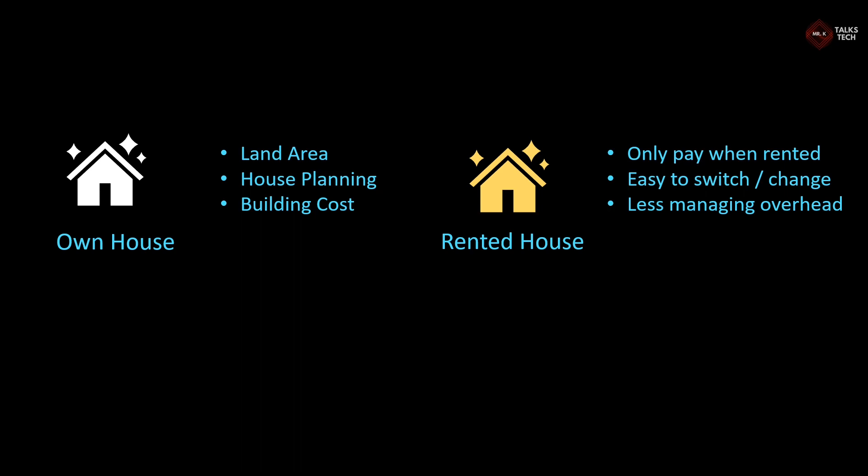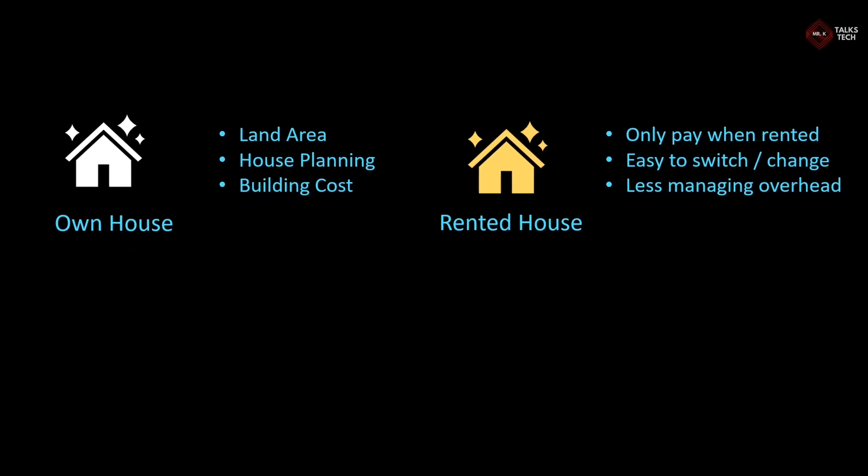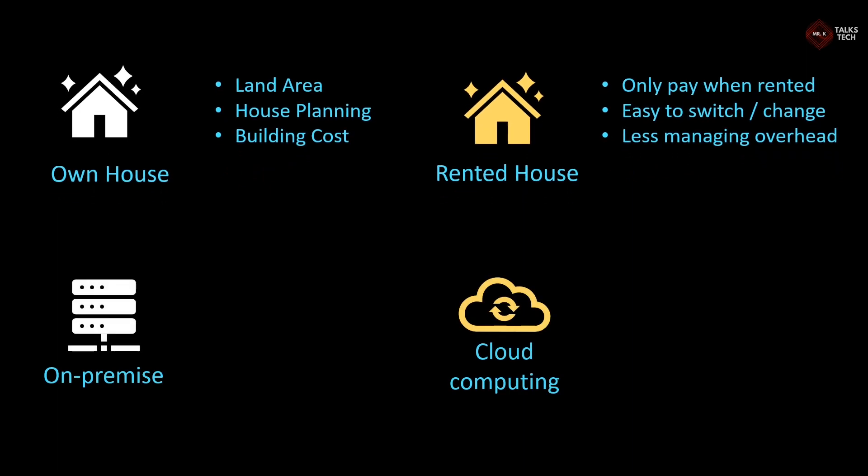So these are some of the main differences between owning a house and renting a house. We could exactly match these with on-premises applications and cloud computing. The own house matches with on-premises and the rented house matches with cloud computing. The reason being that the on-premises application is completely owned by the organization, which means the organization is fully responsible for the application's infrastructure, networking, storage, security, and all other aspects.